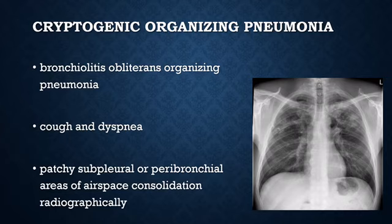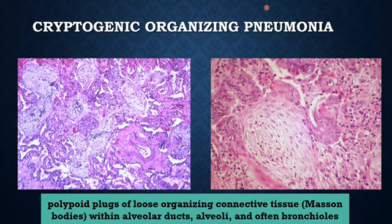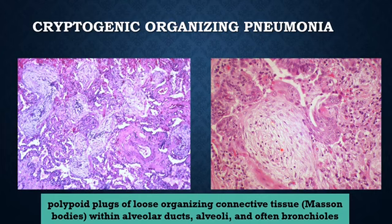Cryptogenic organizing pneumonia is also called bronchiolitis obliterans organizing pneumonia. The patient presents with cough and dyspnea, and on chest x-ray examination there will be presence of patchy subpleural or peribronchial areas of airspace consolidation. Histologically, cryptogenic organizing pneumonia is characterized by the presence of polypoid plugs of loose organizing connective tissue, called Masson bodies, located in the alveolar ducts, alveoli, and sometimes in the bronchioles. On higher magnification, these Masson bodies consist of spindle cells because it is connective tissue.